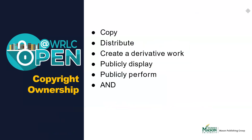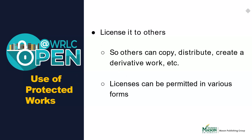It is important to be aware of some basic rights and permissions that owners and users have of copyrighted works. As a creator of original works, copyright owners have the right to copy, distribute, create a derivative work, publicly display, and publicly perform their works. They also have the right to grant permission to use their work with a license. Licenses can be permitted in various forms, such as a license to allow sampling of music or a license to allow public display of a movie.